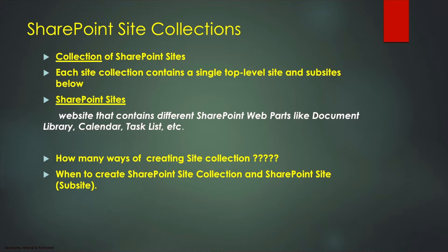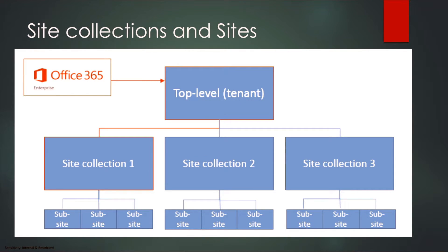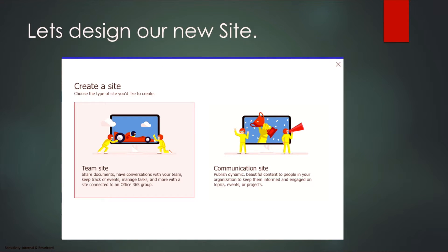The structure of SharePoint Online starts with a root site known as a site collection. Under the site collection there are subsites, and within subsites there are contents, lists, web parts, document libraries, and pages. From the tenant, you create site collections, and within those you create subsites.